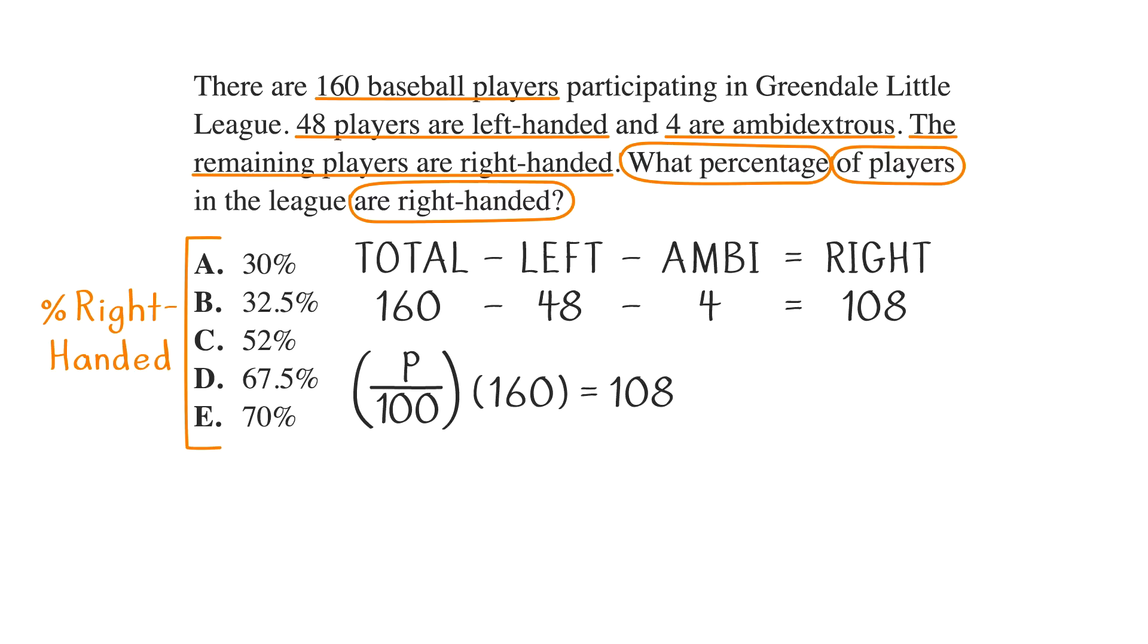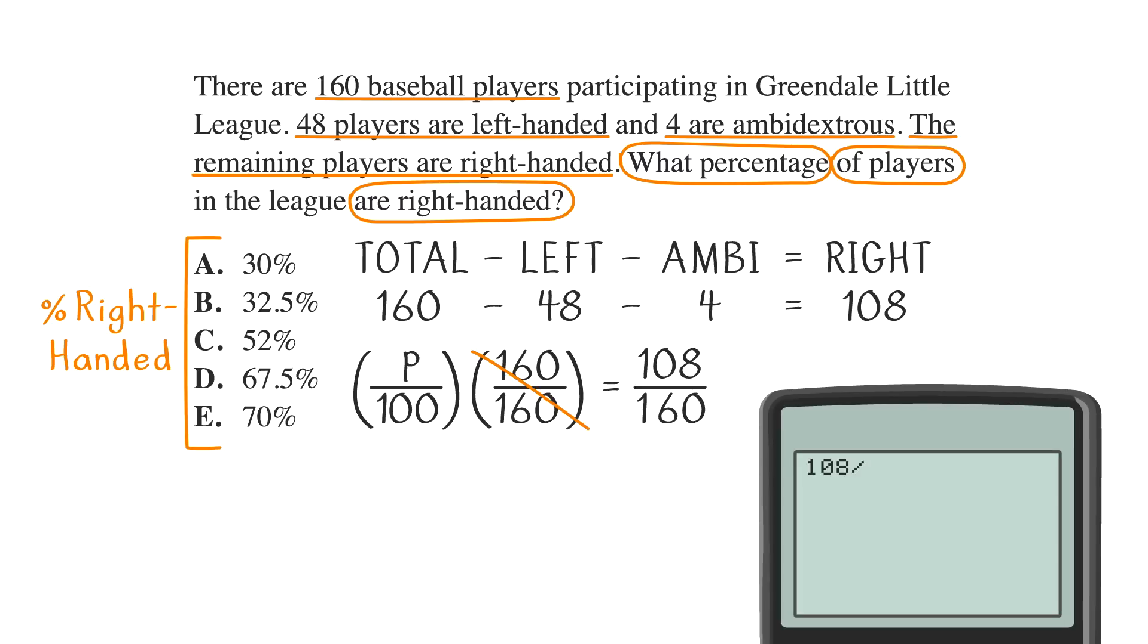Now, we just need to do a little bit of algebra. First, we'll divide both sides by 160. You can use your calculator to get P over 100 equals .675. Then multiply by 100 to get 67.5 percent, which is answer choice D.